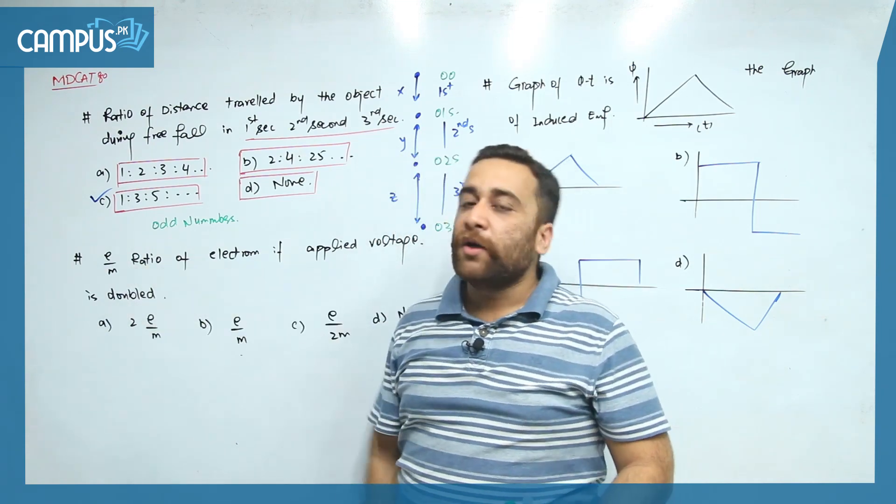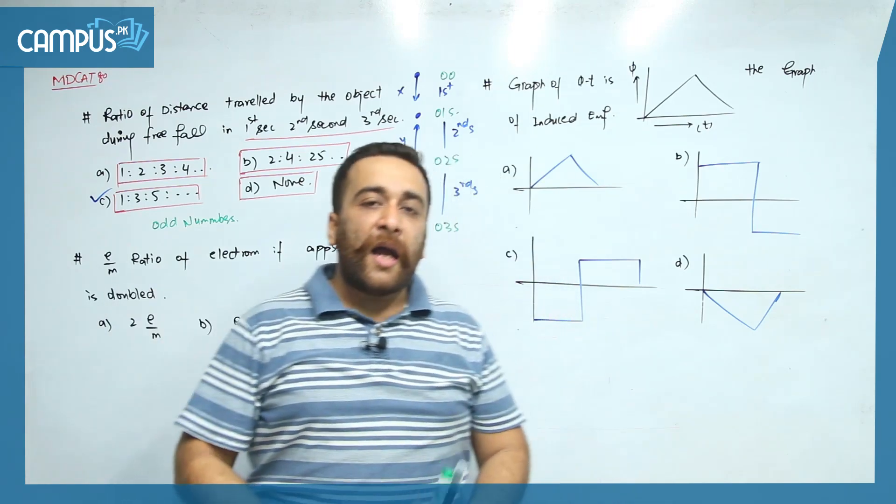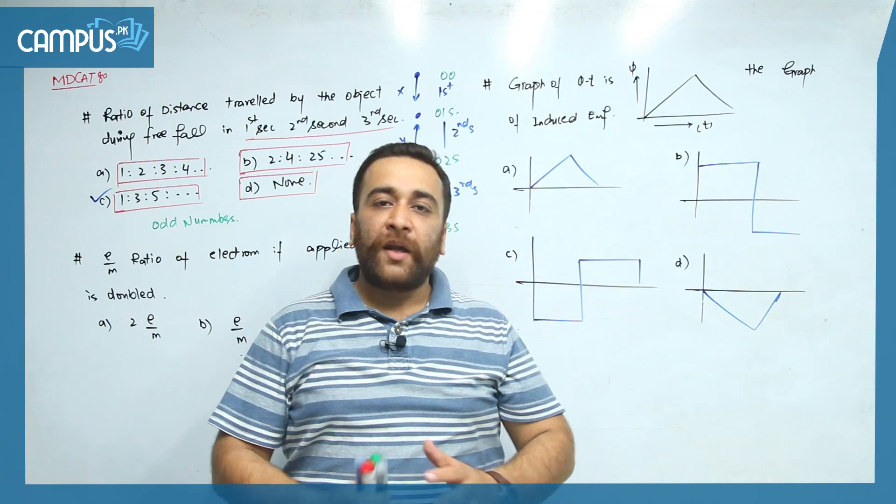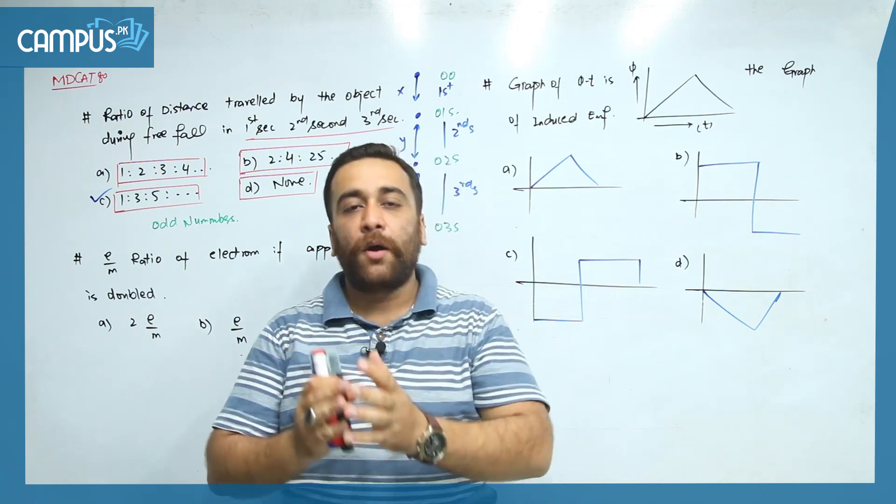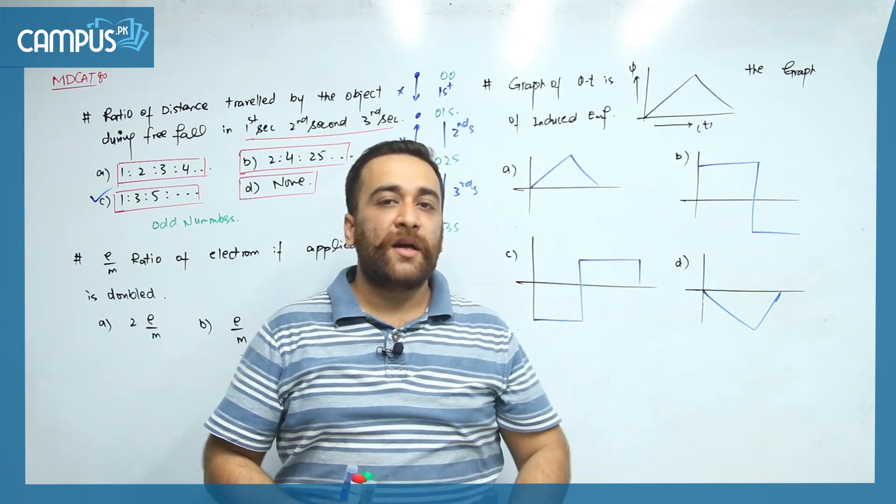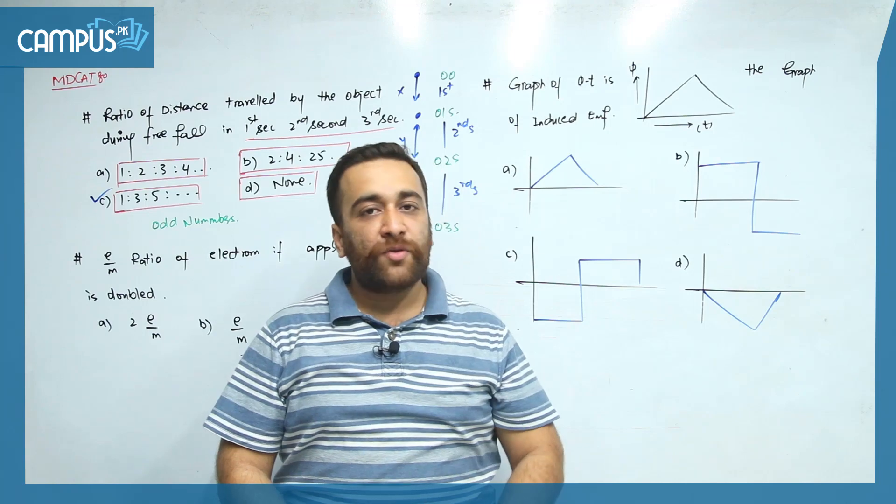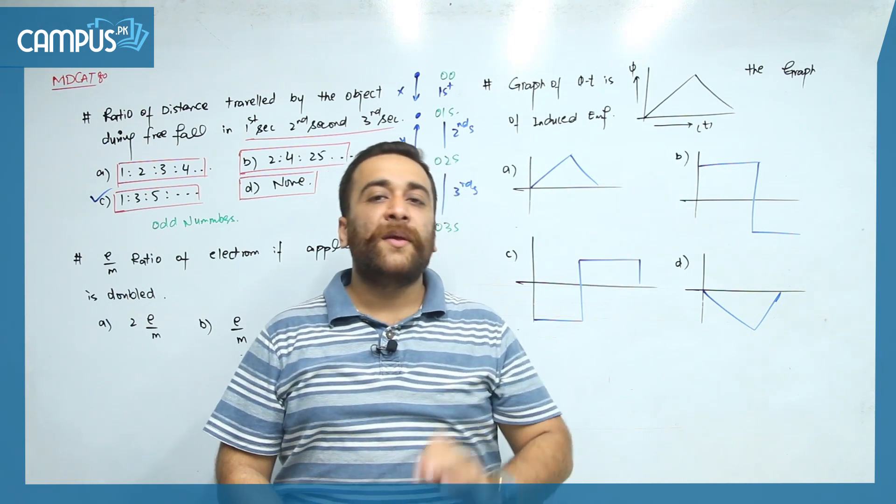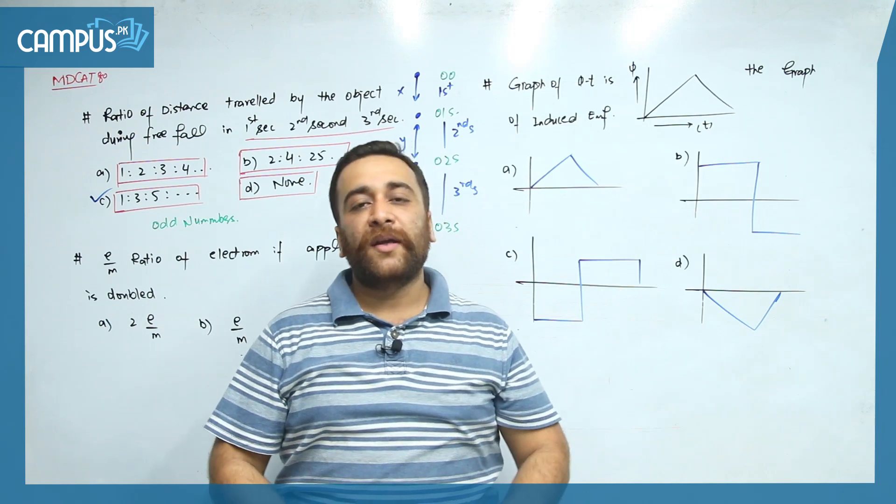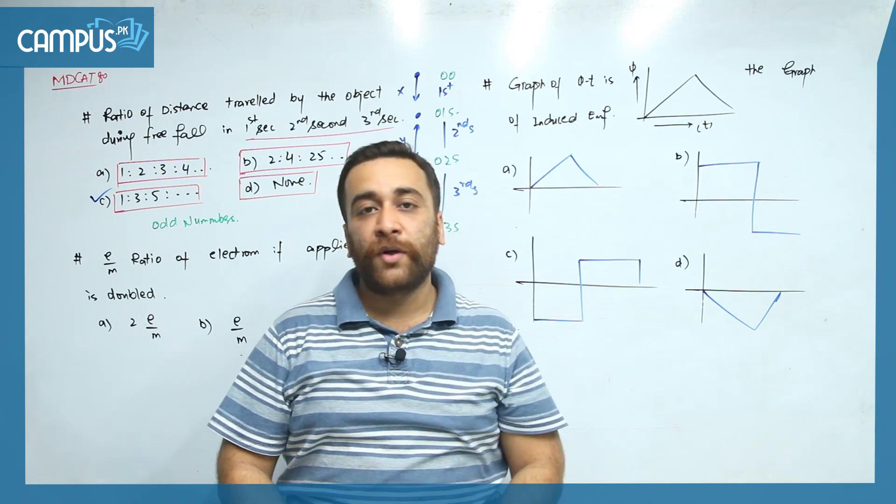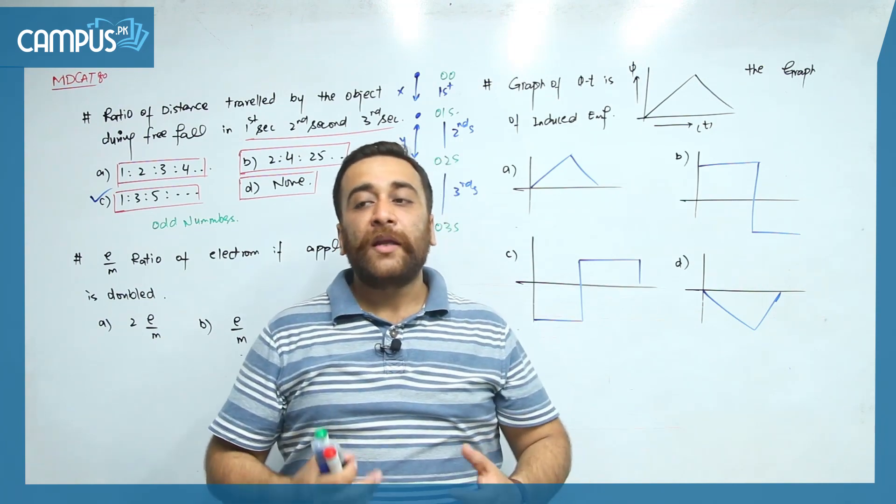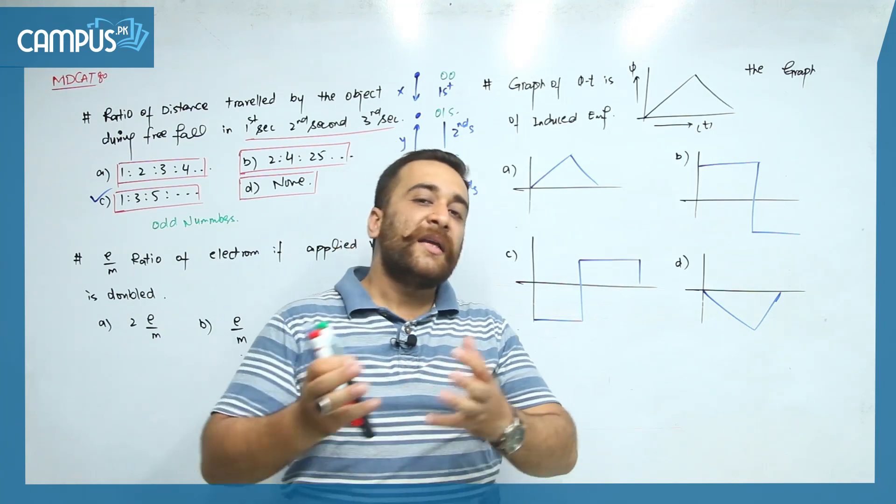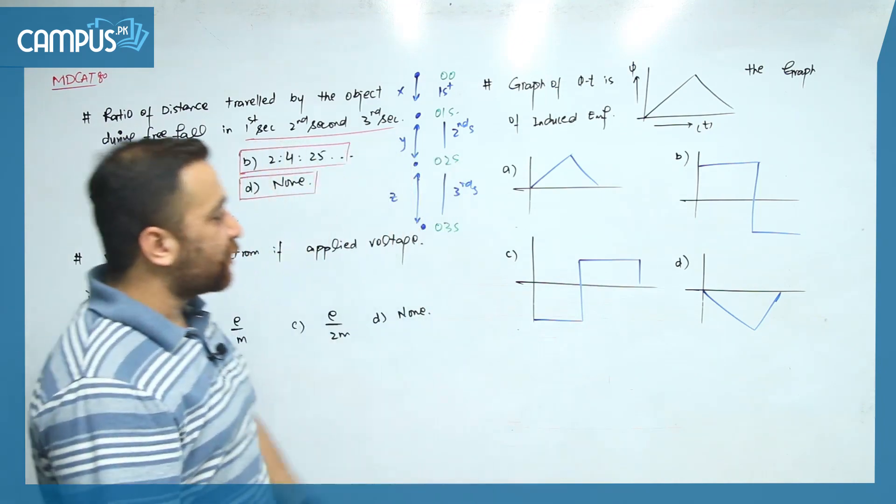I want to tell you that in MDCAT, physics plays a decisive role. Biology is not that much technical, no offense to biology teachers and students, but I'm talking facts. Chemistry is little bit technical, but physics is the decisive subject. It is somehow related to mathematics, so it becomes very difficult for students to solve. We need techniques to make solutions as easy as possible with least time consumption and using common sense.